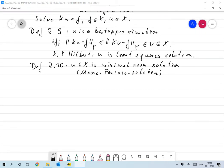norm of u is smaller or equal to the norm of v for all best approximations v. So it's the best approximation of minimal norm.